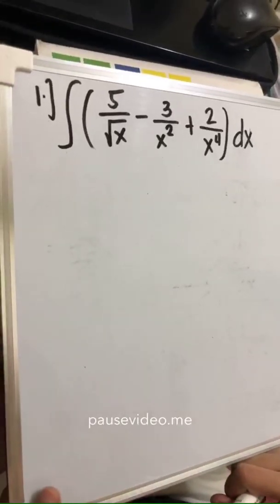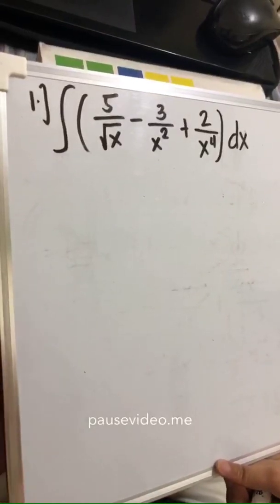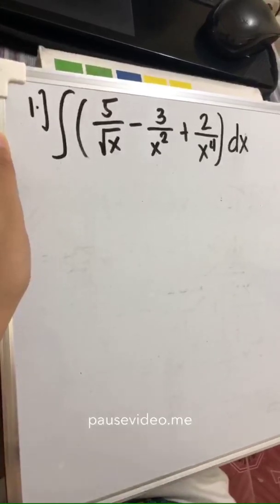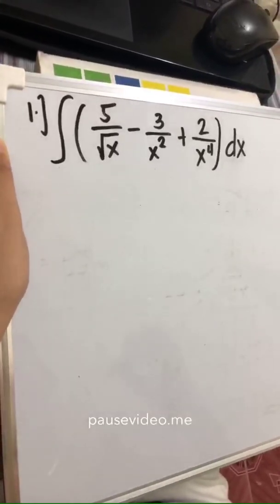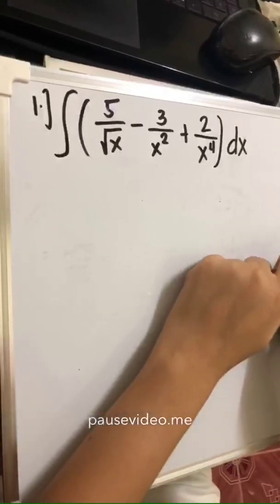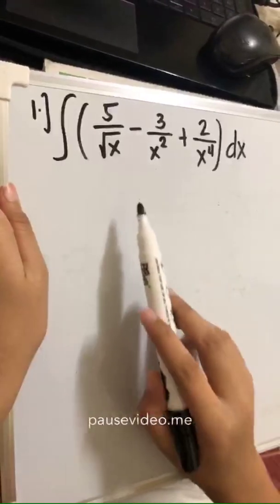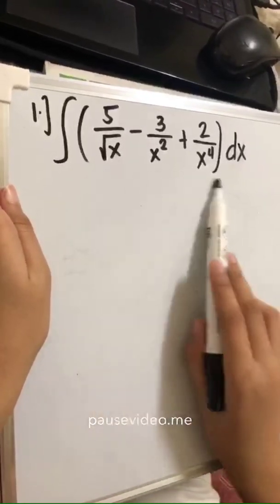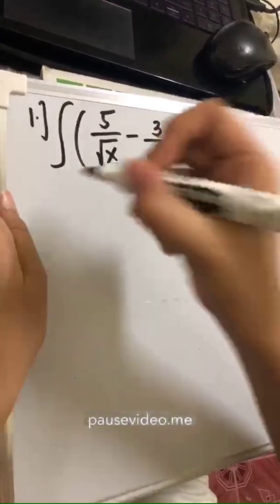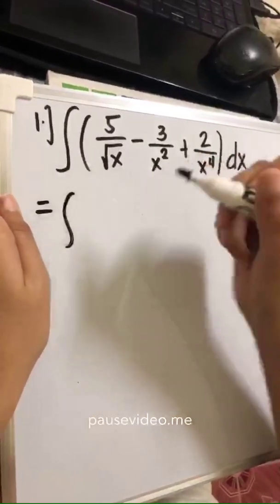As an example, we have here the integral of 5 over square root of x, minus 3x squared, plus 2 over x to the 4th, dx. Since this equation involves fractions, what we need to do is change the exponents of the denominator to its inverse sign so that we can bring them up to the numerator.